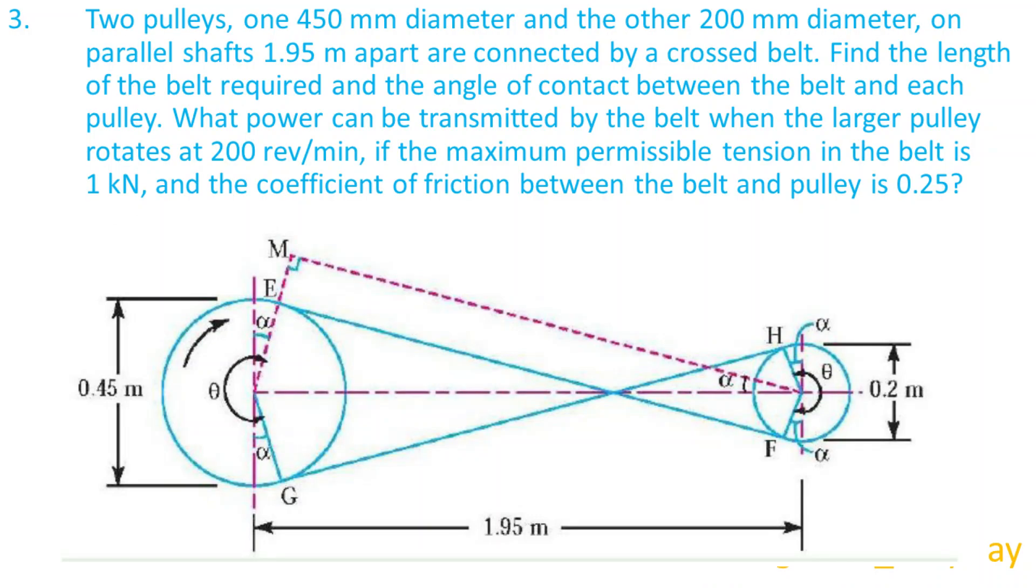Here is a third question. Two pulleys, one 450 mm diameter and the other 200 mm diameter, on parallel shafts 1.95 meters apart are connected by a crossed belt. Find the length of the belt required and the angle of contact between the belt and each pulley.